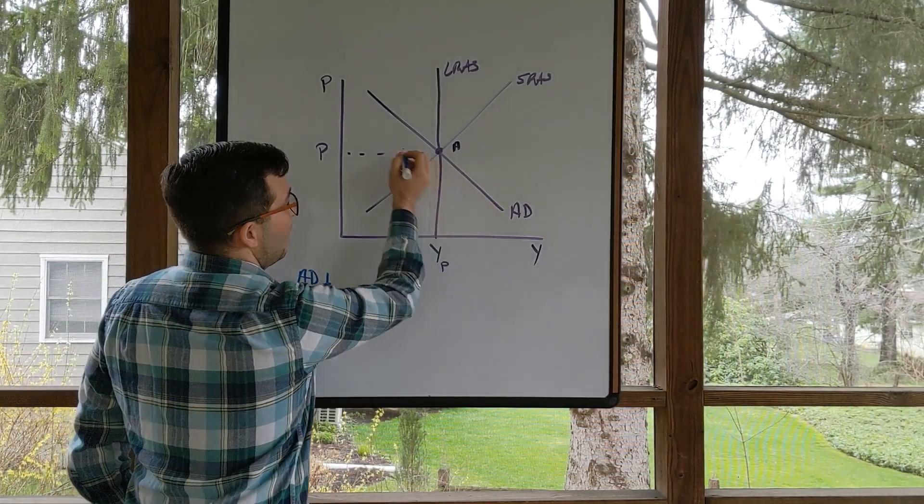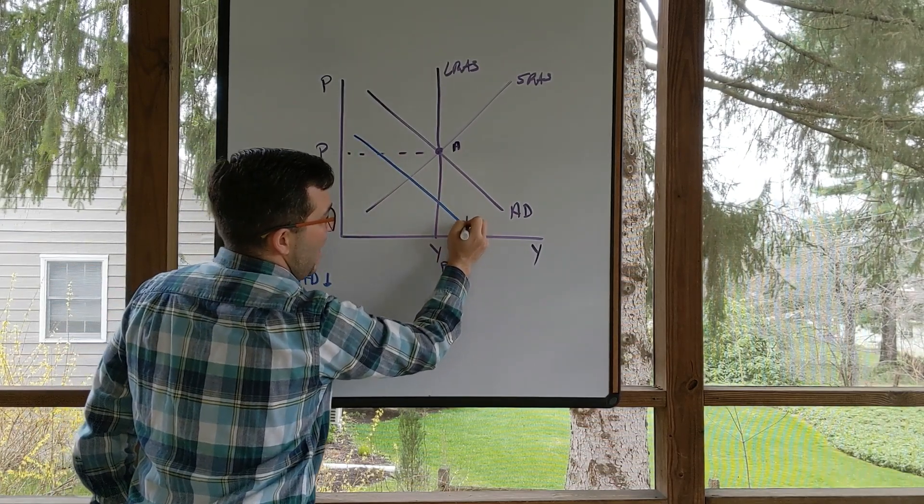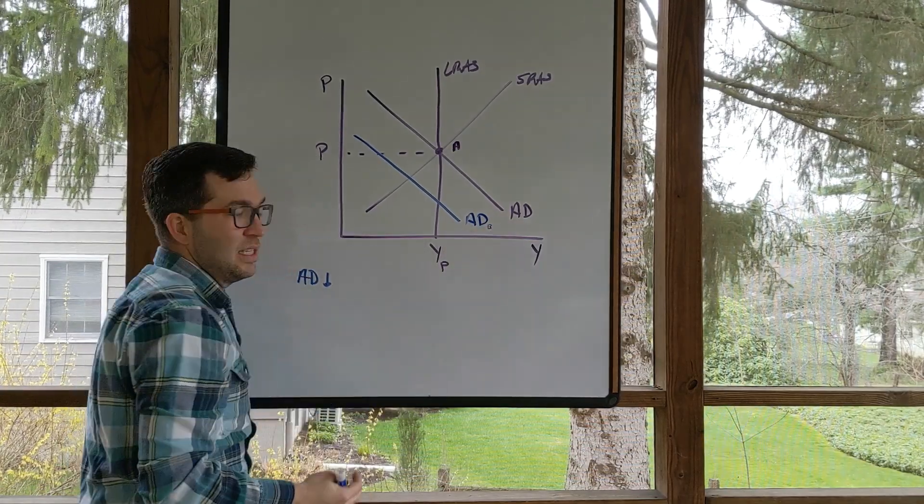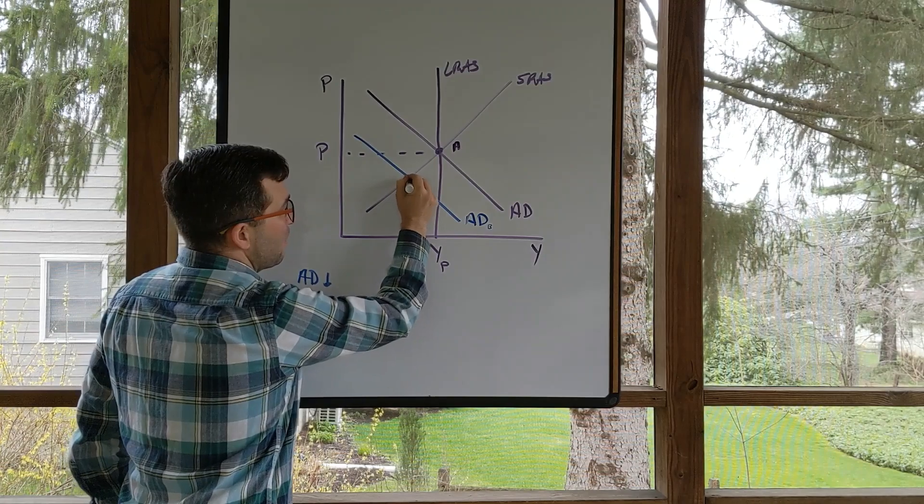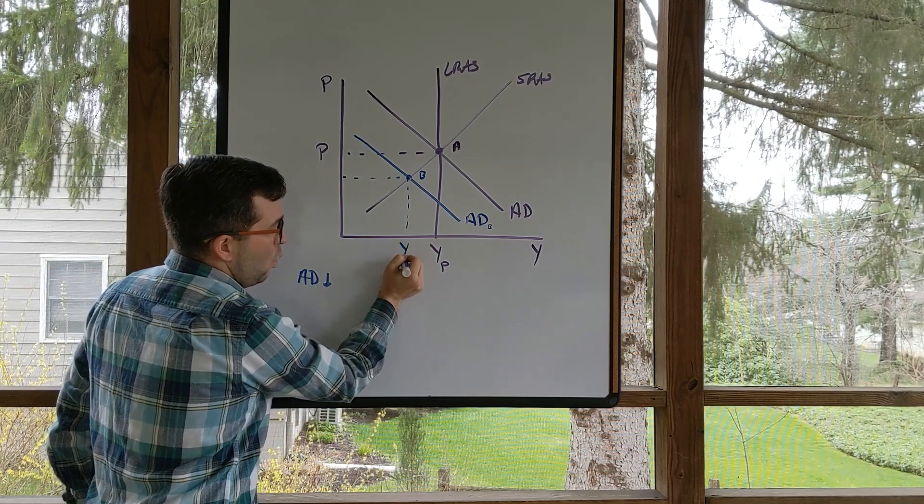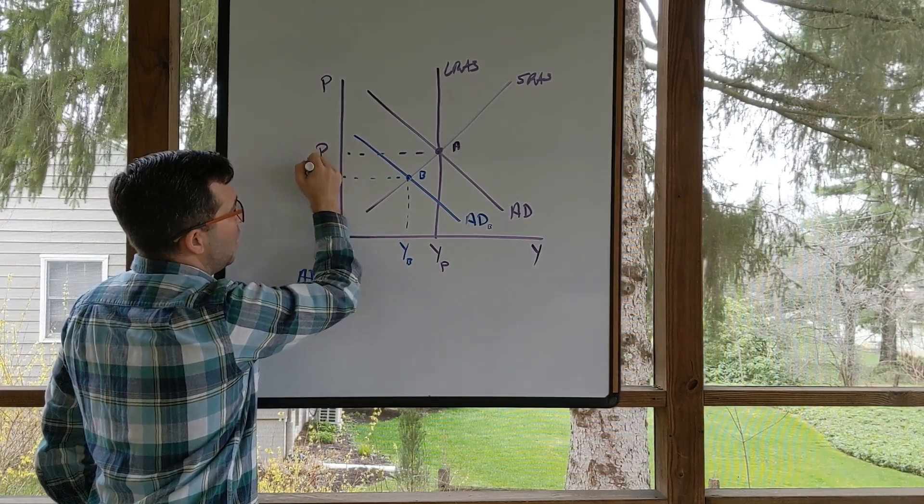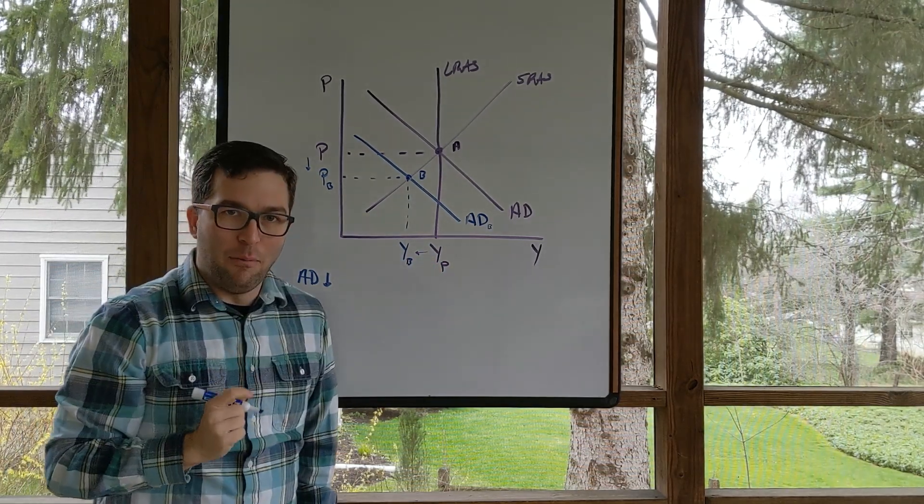So let's show that leftward shift. Let's call this aggregate demand sub B because it's the second one. What we notice is we get to this short run equilibrium with a lower price level and a lower level of output.